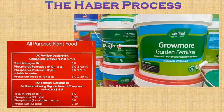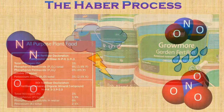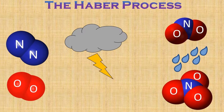Potassium and phosphorus are not uncommon in nature in forms that can be used by plants. But nitrogen is mainly found in the atmosphere as the almost inert nitrogen gas. One of the main sources of usable nitrogen in nature is lightning. The massively high temperatures in lightning bolts cause the nitrogen to react to form nitrogen oxides, which in turn combine with rain to form nitric acid and then nitrates.